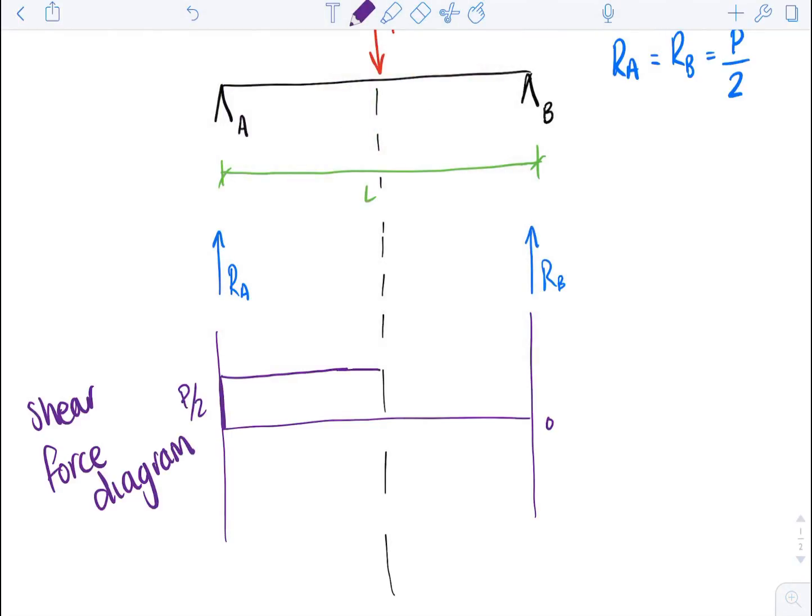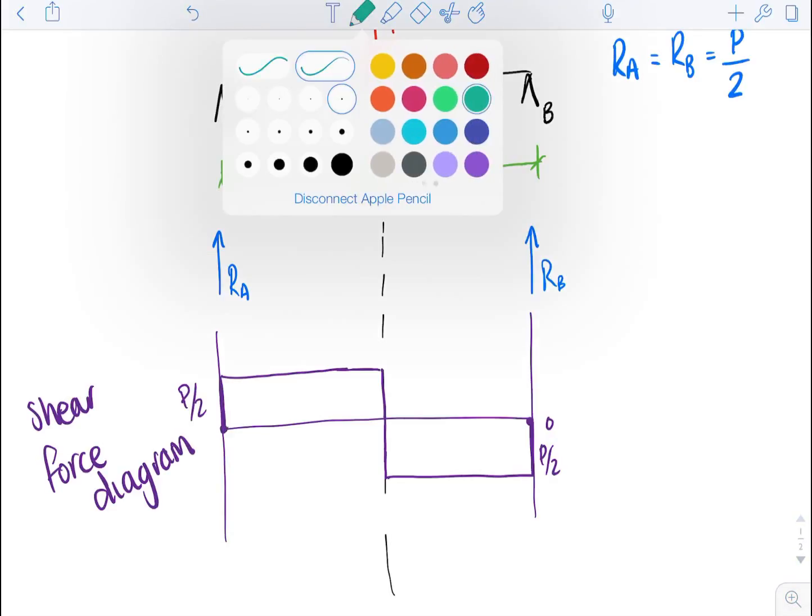And there. So you'll then come down P over 2 and also down another P over 2 because the total force that's acting there is P. And then across, and so then that means that you should then go back up P over 2 and you'll be back at zero. And for your system to be in equilibrium, your shear force diagram must be equal to zero ultimately, which it does in this case.